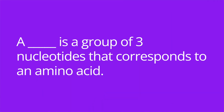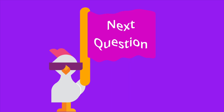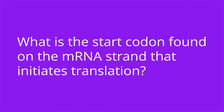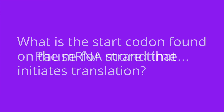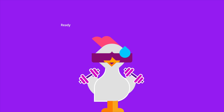It's quiz time, and I've got five questions for you. Question number one: a blank is a group of three nucleotides that corresponds to an amino acid. The answer is codon. Number two: what is the start codon found on the mRNA strand that initiates translation? The answer is AUG.